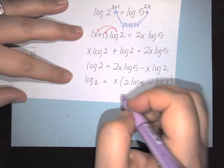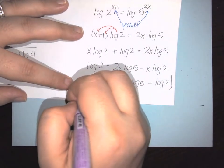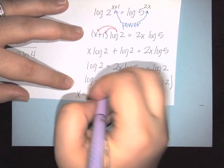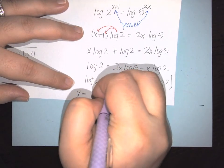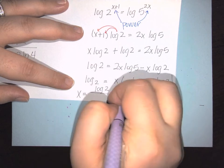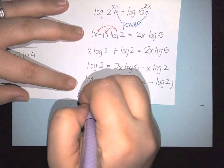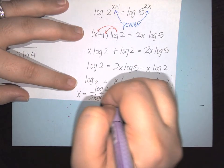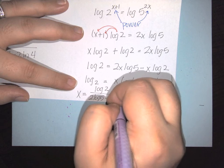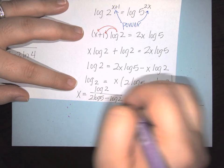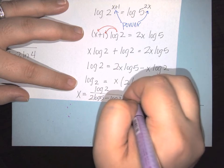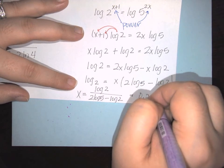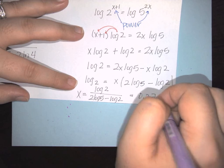So x equals log of 2 divided by the quantity (2 log of 5 minus log of 2), which gives a value of approximately 0.274.